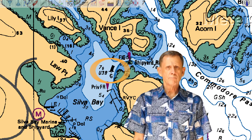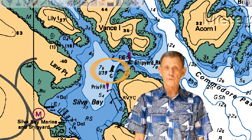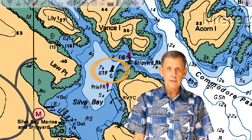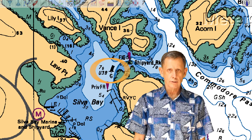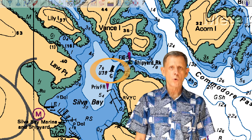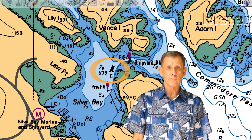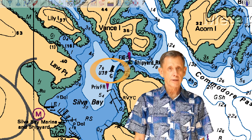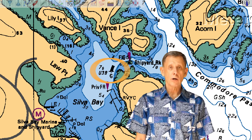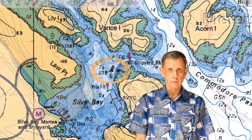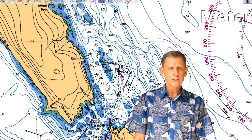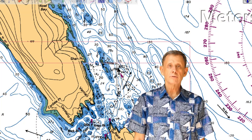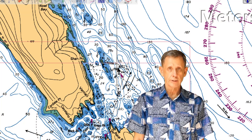The placement of some buoys can be confusing, considering the red right returning memory aid. It's important to check your charts to make sure you know what is the direction of the flood tide and how these lateral beacons mark off safe waters. Let's look at some potentially confusing examples to understand this clearly.